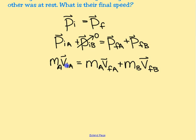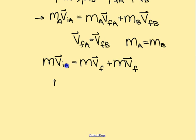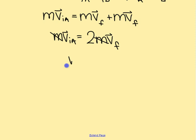This problem says the two cars stick together, meaning V-final of A equals V-final of B. It also tells us both cars have the same mass, so mass of A equals mass of B. Rewriting the equation without subscripts to make it cleaner: on the left-hand side we have mass times V-initial of A, and on the right-hand side we have 2 times mass times V-final. Both sides have mass, so we can cancel it out — even though it's given, we don't need it.